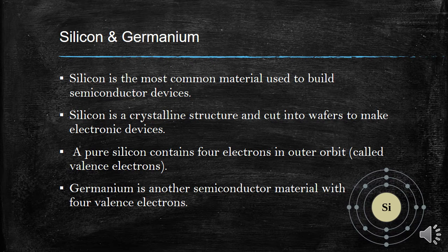We cut silicon into small pieces to create different devices. Silicon and germanium are used to make electronic devices. Looking at silicon's orbit, we can count 1, 2, 3, 4 — silicon has 4 electrons in its outer orbit, which is why it is important for semiconductor devices.